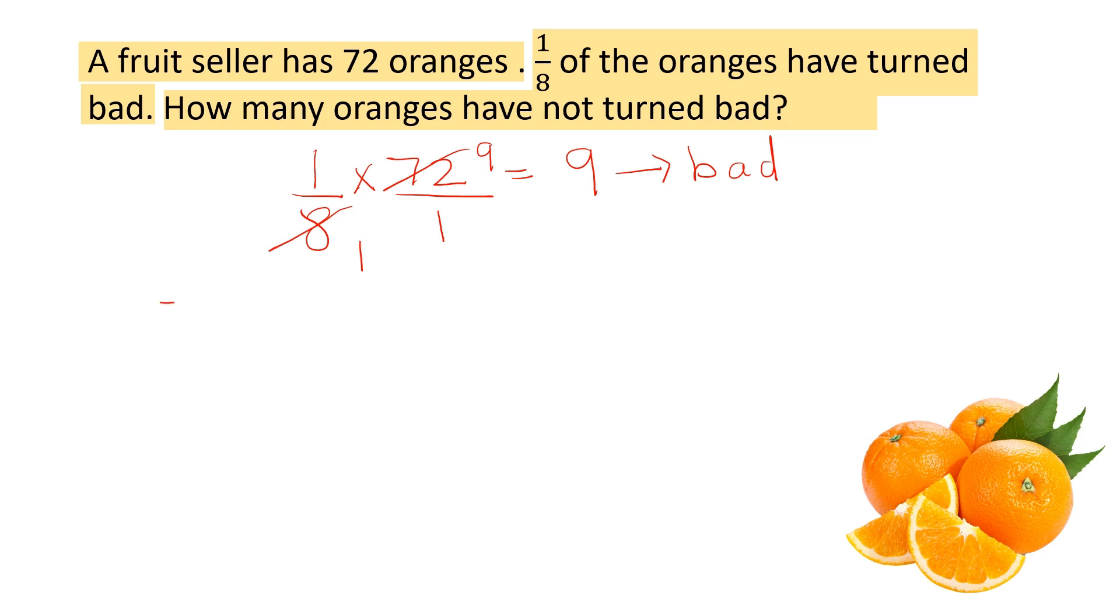So, there were 72 oranges and 9 of them are bad. So, if we subtract these 2 values, we will know how many oranges have not turned bad. What is 72 minus 9? 63. 63 oranges have not turned bad. This is our answer.